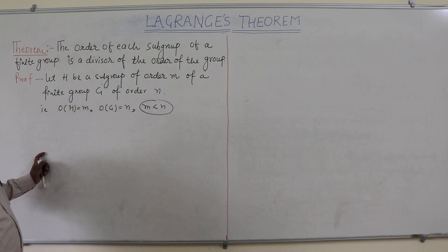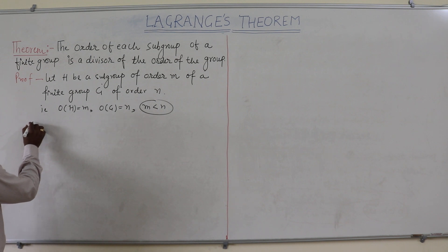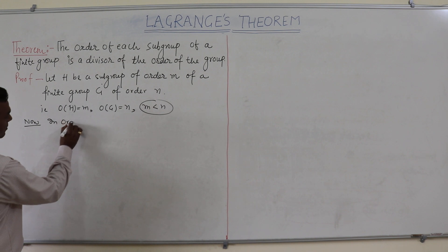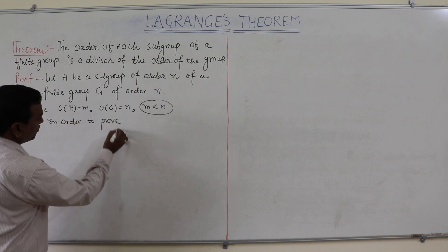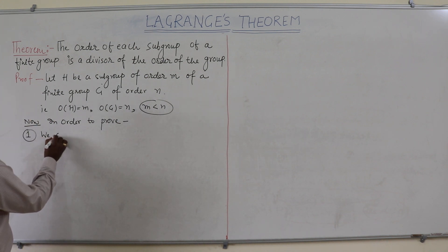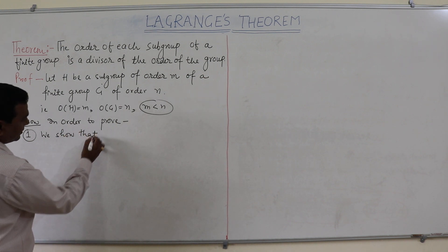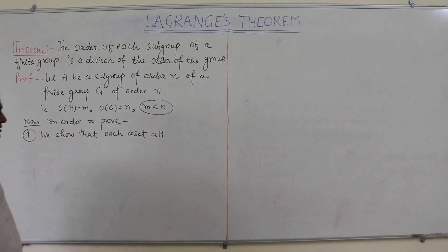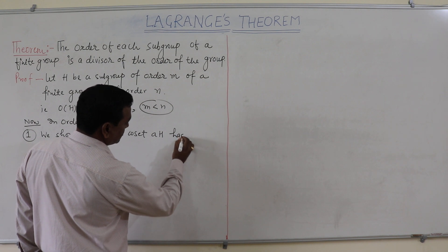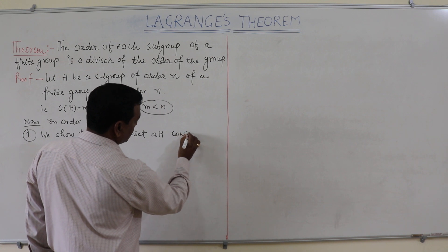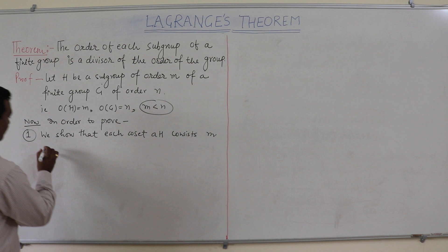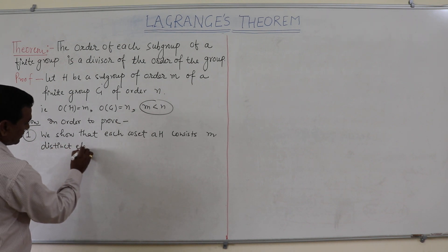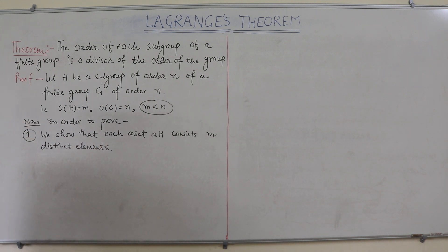Now, in order to prove this theorem, we use two parts. In order to prove the first part, we show that each coset consists of M distinct elements.